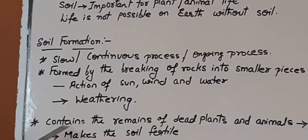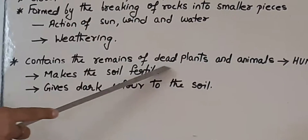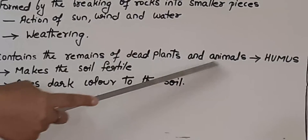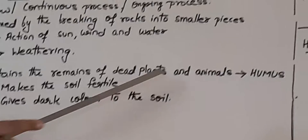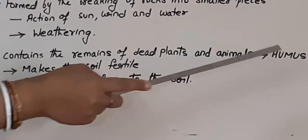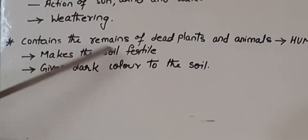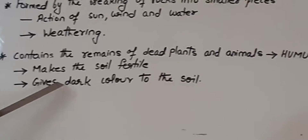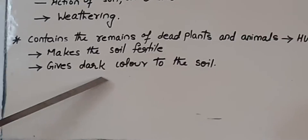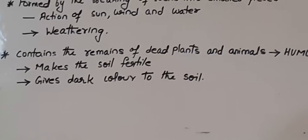Soil also contains the remains of dead plants and animals, which we call humus. This humus makes the soil fertile and also gives a dark color to the soil.